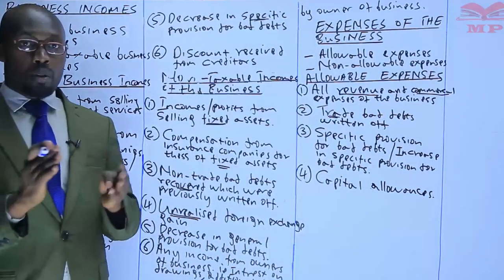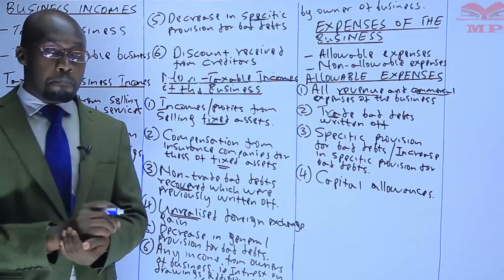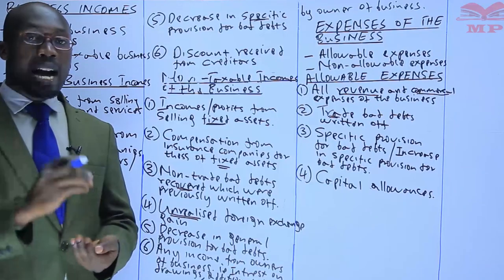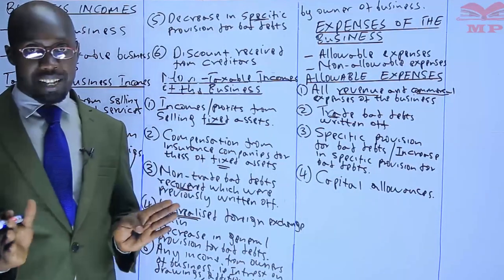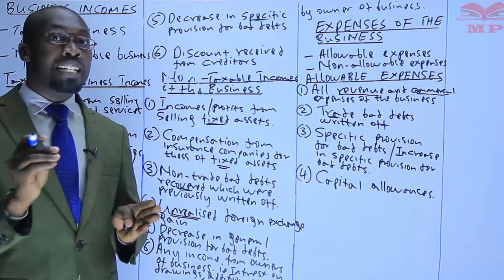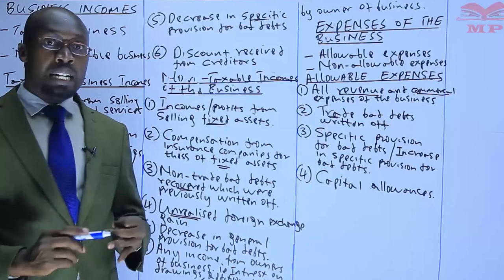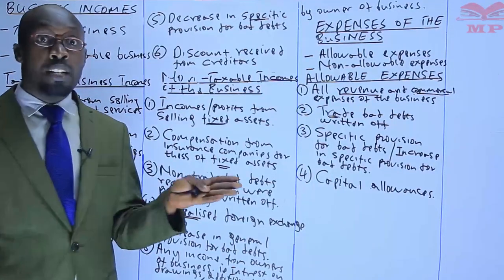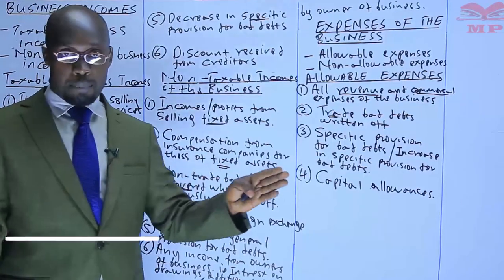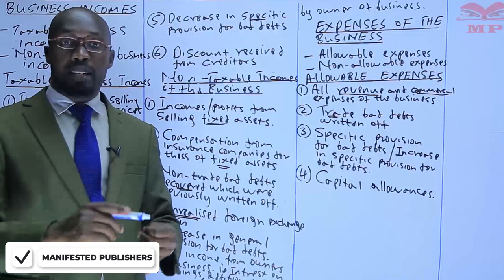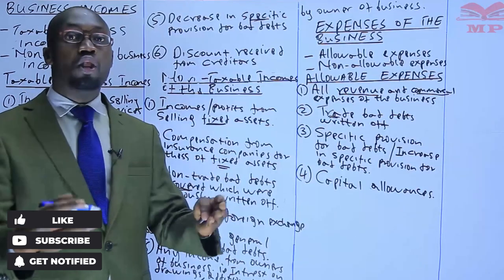The fourth allowable expense is capital allowances. In accounting, depreciation is deducted against profit, and accountants may also deduct the cost of fixed assets. However, in taxation you are not allowed to deduct depreciation, nor the cost of fixed assets. What you deduct instead is called capital allowances. There are various types of capital allowances: the wear and tear allowance, investment deduction, industrial building deduction, farm works allowance, mining allowance, and diminution in value for tools.